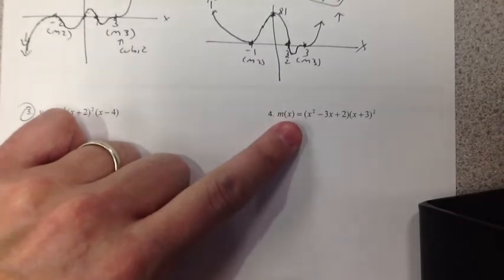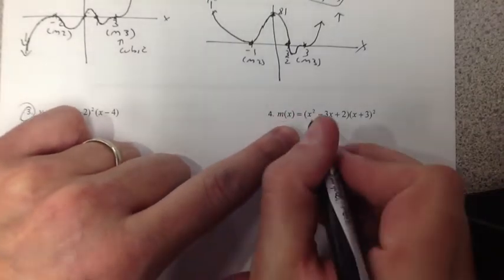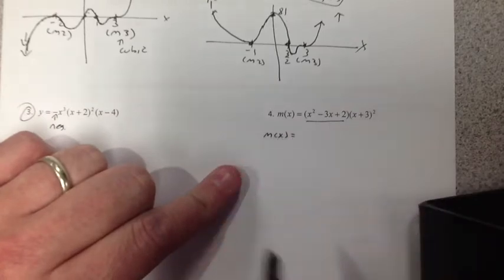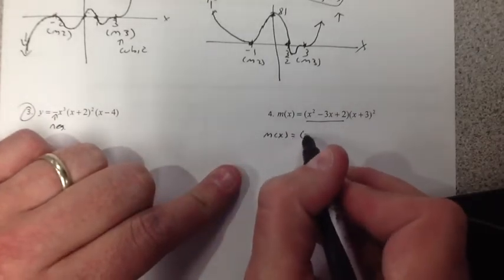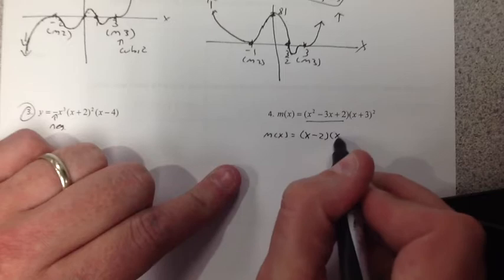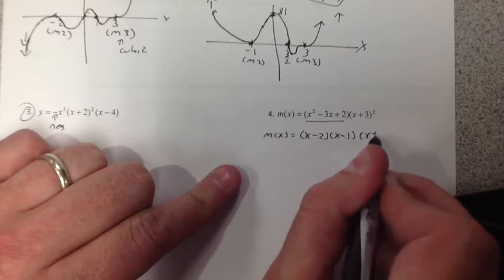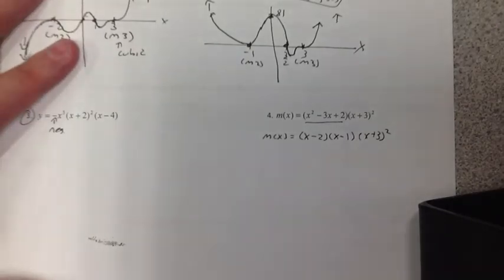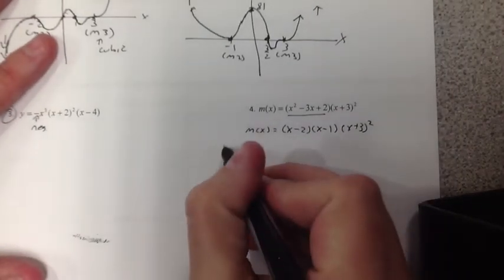So, we're going to take a look here. Now, this isn't factored. The first thing you have to make sure you do is factor it. This becomes x minus 2, x minus 1, and x plus 3 squared. And now, I just do the same thing. Hey, baby. What's your type?